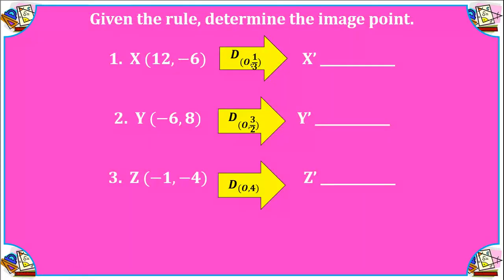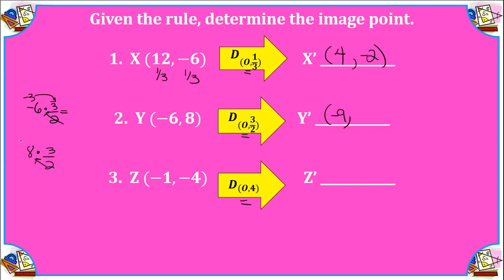Without a graph, the center of dilation must be the origin, so we simply multiply each coordinate by the scale factor. Multiplying by a unit fraction of one-third is the same as dividing by 3, giving (4, −2). In the next example, the scale factor is three-halves, which is an enlargement. Multiplying −6 by 3/2: divide 2 into −6 to get −3, then −3 times 3 equals −9. Multiplying 8 by 3/2: divide 2 into 8 to get 4, then 4 times 3 equals 12. For Z to Z', multiplying by a scale factor of 4.